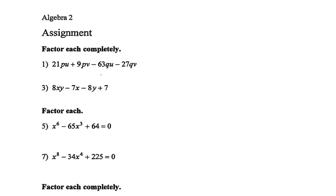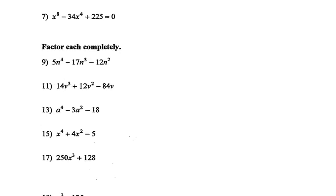This video is about a review for factoring. Now let's go to number nine. For number nine, three terms — but always check for a common factor. The common factor is n squared.